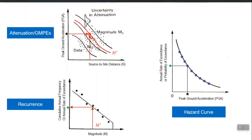Generally, in order to account for the uncertainty associated with the selection of GMP, we use more than one GMP and then we use a logic tree framework. For example, we give more weightage to a GMP which is more reliable according to our information, and less weightage to a GMP which is less reliable. Similarly, we do this for all inputs which we are not sure about.